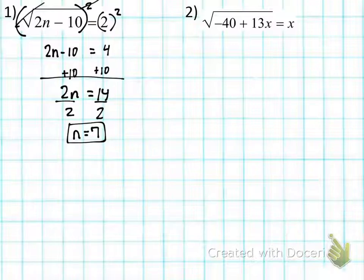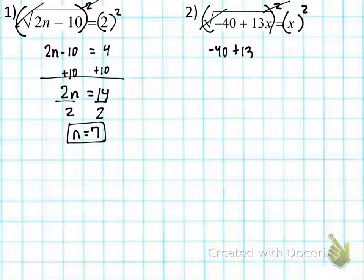All right, next one, number 2. Number 2, we have a radical sign equal to x. So this radical, again, is conveniently already isolated. But there's going to be problems today where we don't have that. So we're going to square the radical sign and the opposite side, because whatever we do to one side, we do to the other. The radical and the squares cancel out, leaving just negative 40 plus 13x is equal to x squared.